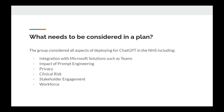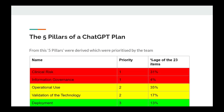We spent about two or three hours brainstorming all the different aspects of what needs to be considered in a plan. The fact that it is integrated into Microsoft solutions, the impact of prompt engineering — which is a massive subject in itself and I implore you all to investigate that — privacy, clinical risk, stakeholder engagement, and workforce were the areas we considered. We came up with five pillars of a ChatGPT plan in the NHS.